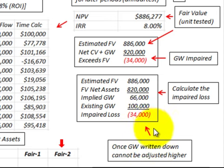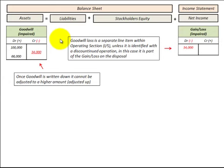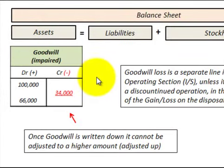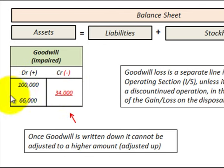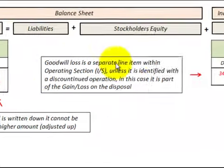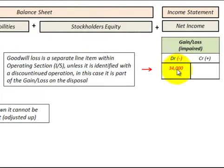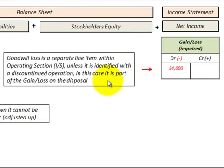Once goodwill is written down, it cannot be adjusted any higher. To record this goodwill loss, we reduce our goodwill account by $34,000 — starting at $100,000, the net amount becomes $66,000. We recognize a loss as part of net income, and that goodwill loss would be a separate line item within the operating section on the income statement, unless it's identified with a discontinued operation, in which case it would be part of the gain or loss on disposal.